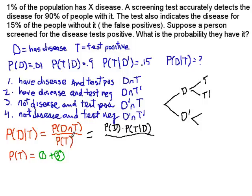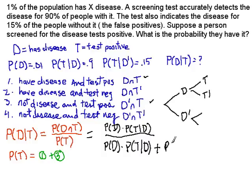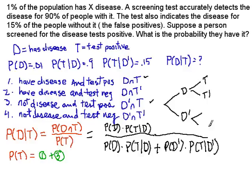That's divided by the probability they test positive, which we identified as coming from two classes. So that's the same term used in the numerator — the probability of D times the probability that they test positive given they have the disease — plus the probability they do not have the disease times the probability that if they do not have the disease, they will test positive. This is the statement of Bayes' theorem. It's a confusing statement with lots of primes and conditional probabilities, which is why calculating from the decision tree is a little more straightforward.